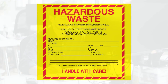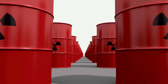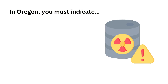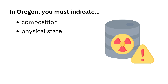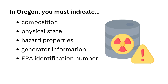Step 2: Label, log materials, and place into hazardous waste containers. In Oregon, you must label all hazardous waste containers as hazardous waste and indicate the composition, the physical state (liquid, solid, gas), the hazard properties (flammable, corrosive, toxic, or reactive), the generator information, the EPA identification number, and the accumulation start date.